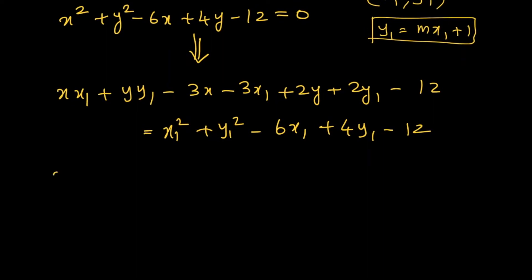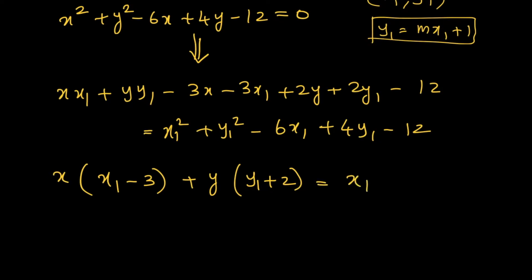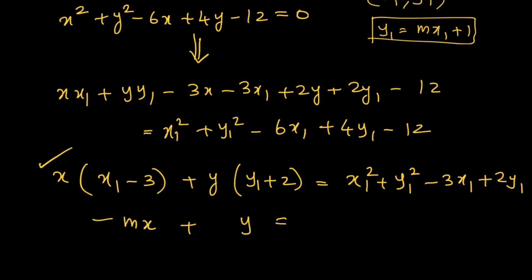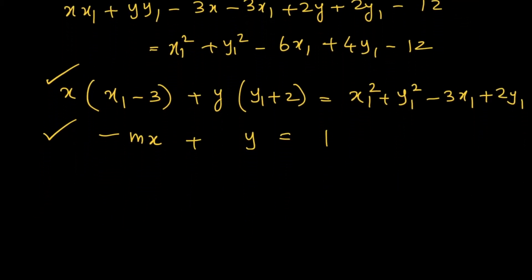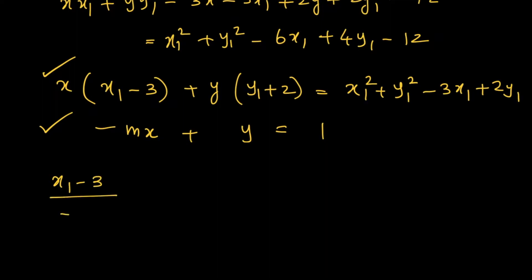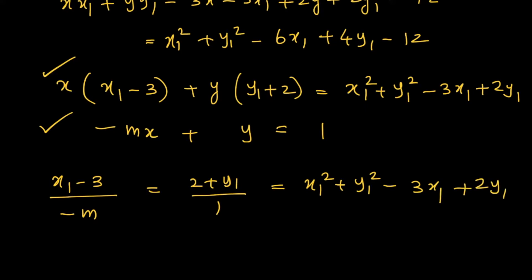Writing this straight line in standard form: x(x₁ − 3) + y(y₁ + 2) = x₁² + y₁² − 3x₁ + 2y₁. This line is the same as y = mx + 1, i.e., −mx + y = 1. Since these two lines are exactly the same, the coefficients will be in proportion: (x₁ − 3)/(−m) = (2 + y₁)/1 = x₁² + y₁² − 3x₁ + 2y₁.